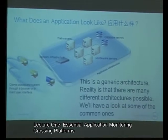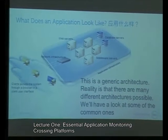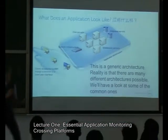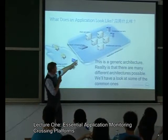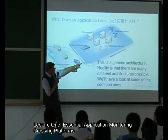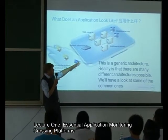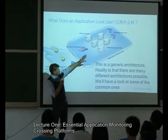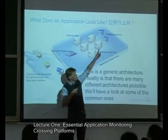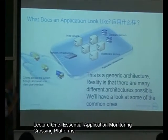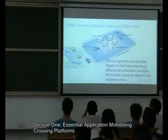A generic basic application architecture typically has a web server layer to serve static content, a middle layer that handles business logic, and a database at the back end.